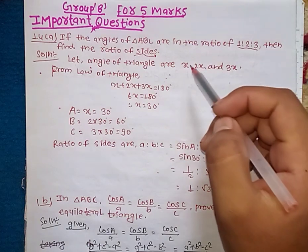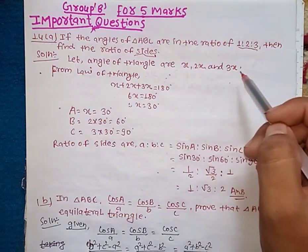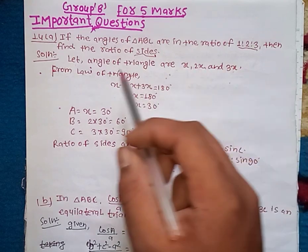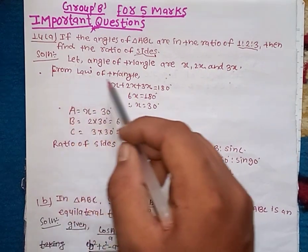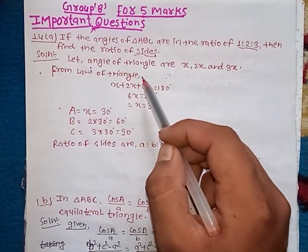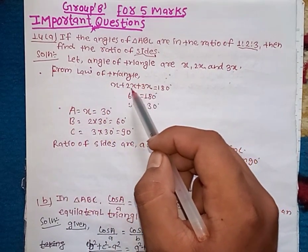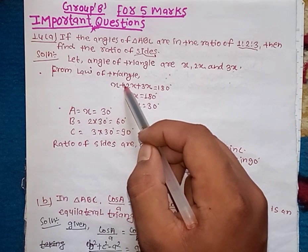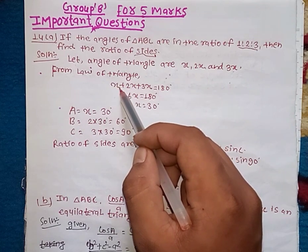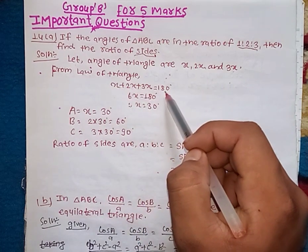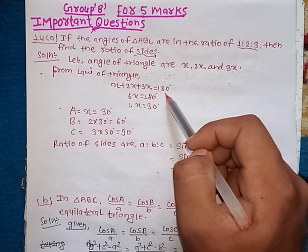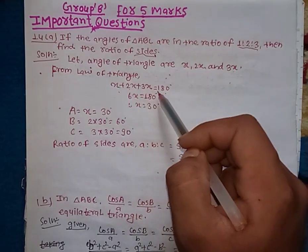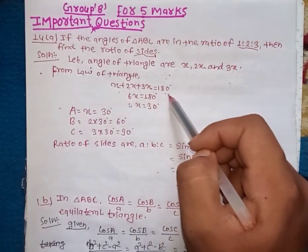When I see the angle ratio, I am going to find the three angles of the triangle. So x plus 2x plus 3x equals to 180 degrees.